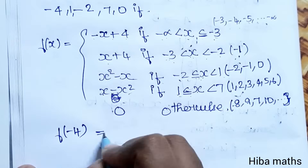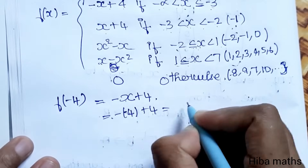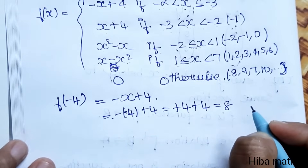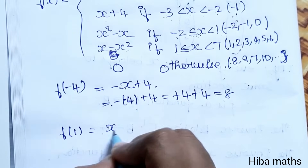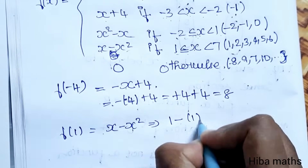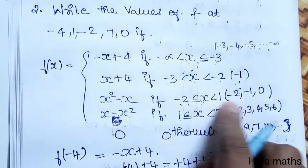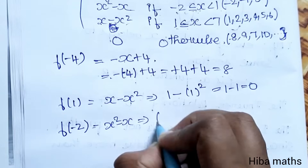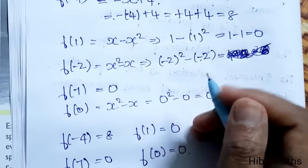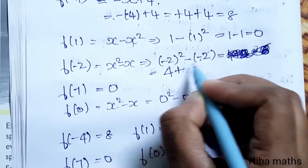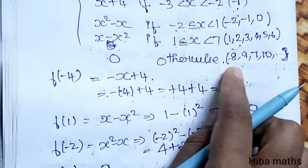First, f of minus 4: minus 4 falls in the first condition, so function is 2x plus 4. Substitute x equals minus 4: minus of minus 4 plus 4 equals 8. Second, f of 1: function is x minus x squared, so 1 minus 1 squared equals 1 minus 1, which equals 0. Third, f of minus 2: function is x squared minus x, so minus 2 whole squared minus of minus 2.